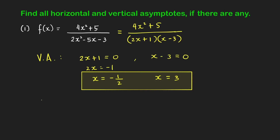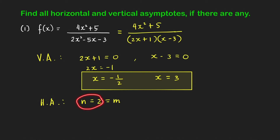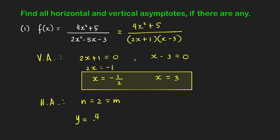Now, does f have a horizontal asymptote? To find it, we look at the degrees of the highest-degree terms in the numerator and denominator. The value of n equals 2 and the value of m also equals 2. Since n equals m, the horizontal asymptote is the line y equal to the ratio of the leading coefficients, which is 4 over 2, equal to 2. So the horizontal asymptote is y equals 2.